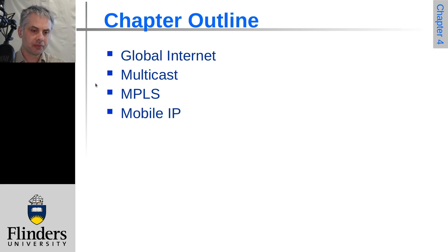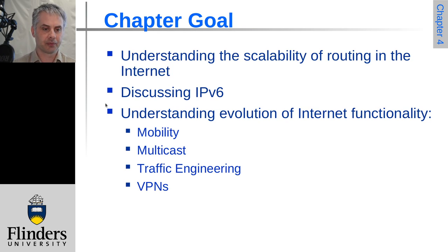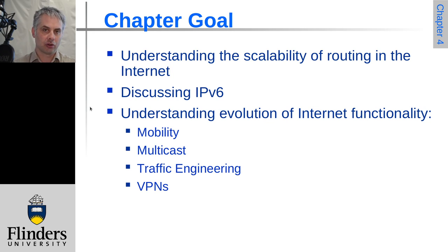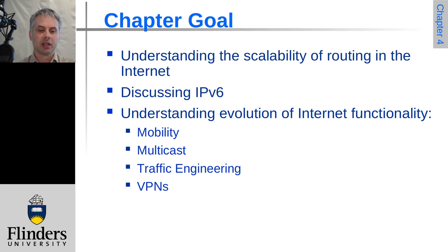We'll have a look at four things in this chapter: the global internet, multicast communication, multi-protocol label switching, and mobile IP. What we're really trying to look at is how do we do internetworking on a global internet scale as we know it today. We want to talk about IPv6 and the role it has in that, and a little bit of discussion about how IPv6 hasn't yet dominated and some reasons around that.